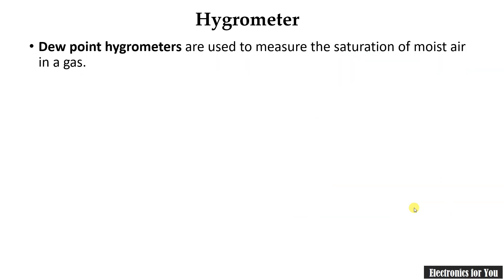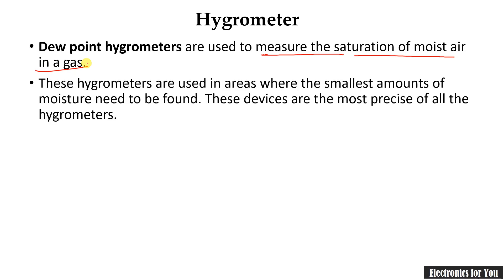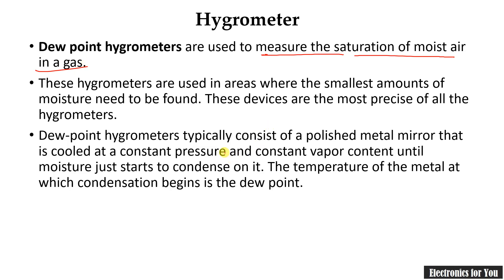The last type of hygrometer is the dew point hygrometer. It is used to measure the saturation of moist air and is one of the most precise types used in industry due to its very good accuracy. Dew point hygrometers typically consist of a polished metal mirror that is cooled at constant pressure and constant vapor content until moisture just starts to condense on it. The temperature of the metal at which condensation begins is the dew point.